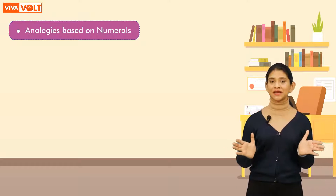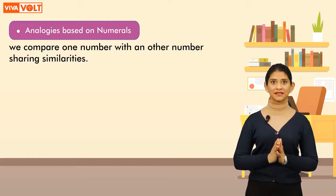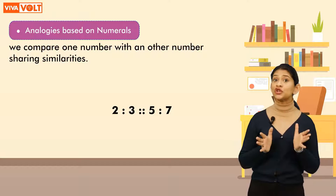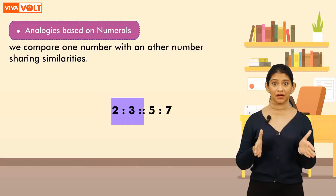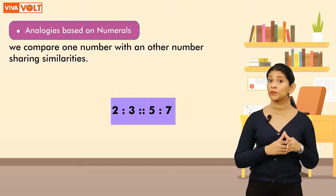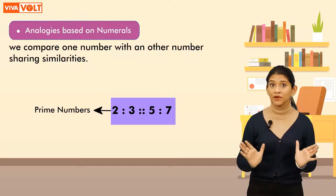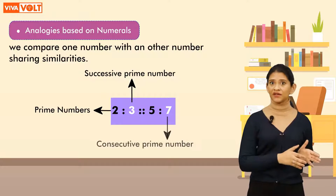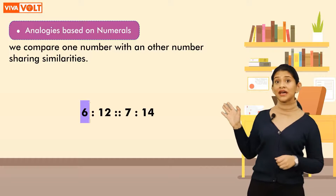Let's start with analogies based on numerals. In this type, we compare one number with another number sharing similarities. Look at this analogy and try to understand the relationship between the given number pairs: 2 : 3 :: 5 : 7. If you observe carefully, you will notice that they are all prime numbers — 3 is the successive prime number to 2, and similarly 7 is the consecutive prime number to 5.